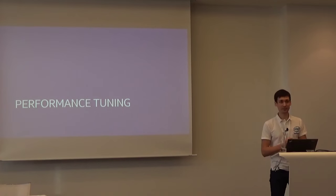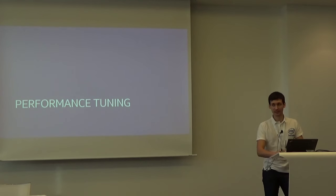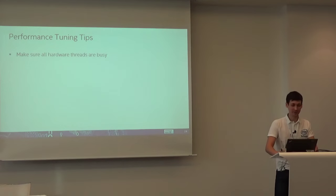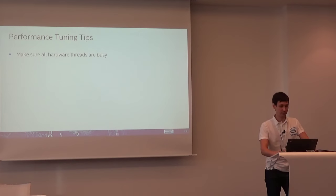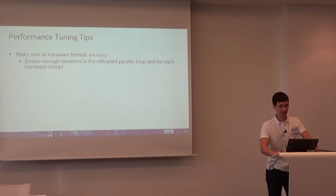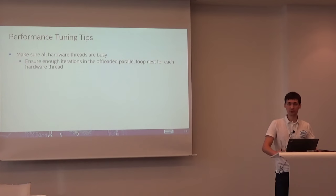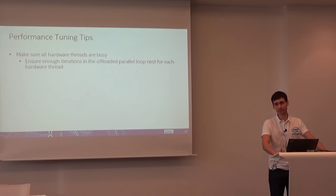Performance tuning: we wrote our code and it compiled, but it doesn't mean it will be fast — it may even be slower than the serial version. First, we need to utilize all threads by giving enough iterations and enough work for each thread, since we are talking about massively parallel execution on the processor graphics. For this purpose, if you have nested loops, collapse them explicitly with the collapse clause in OpenMP, or if you use nested cilk_for loops, the compiler will do it automatically.